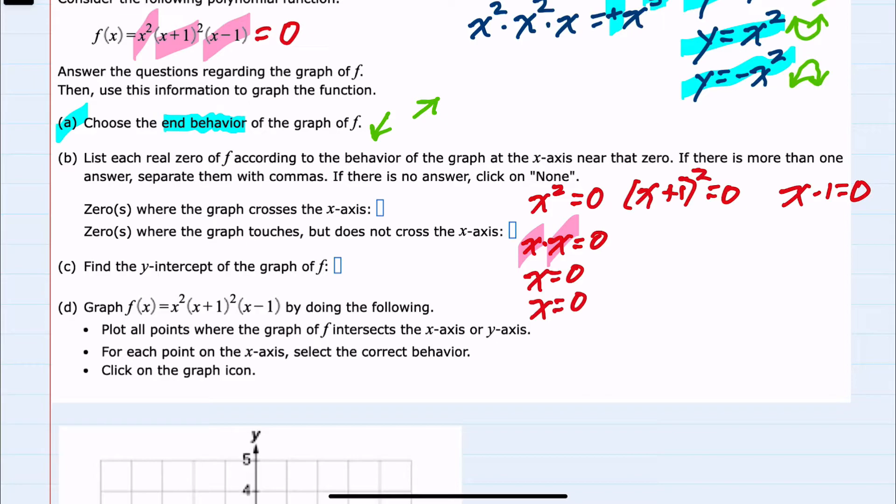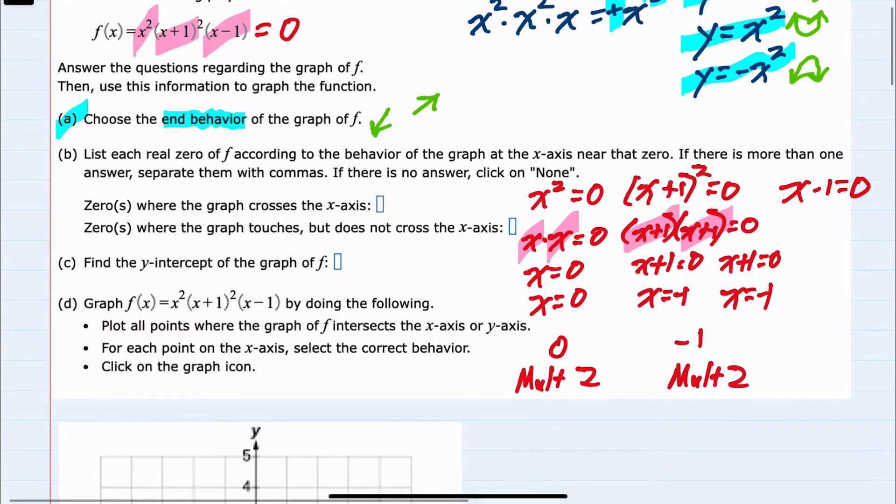Moving to the next one, x plus 1 squared is 0. So x plus 1 times x plus 1 equals 0. So here again, either x plus 1 is 0, which means x is negative 1. And from the second part, the same, x plus 1 is 0, so x is negative 1. So far we have two zeros, 0 with a multiplicity of 2, and negative 1 with a multiplicity of 2. And our last here, x minus 1 equals 0, means that x equals 1.